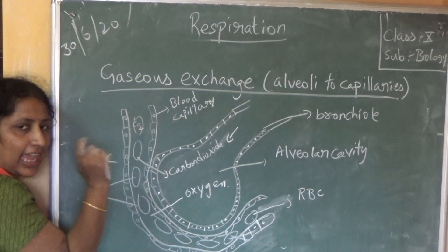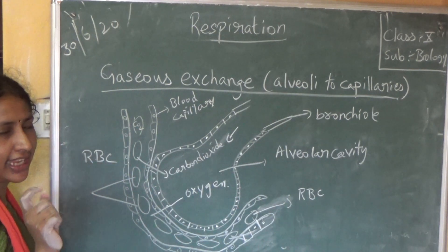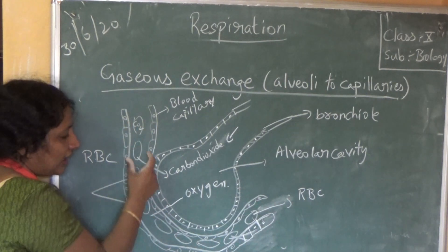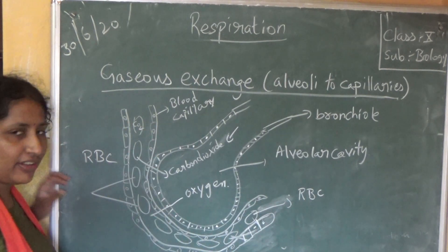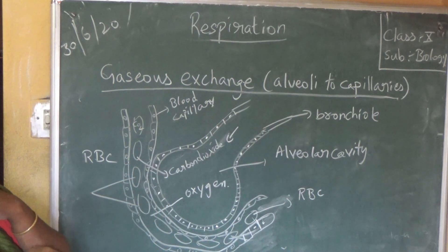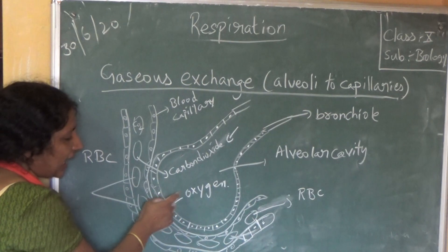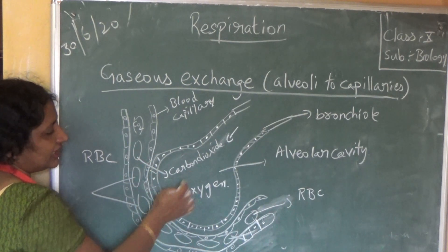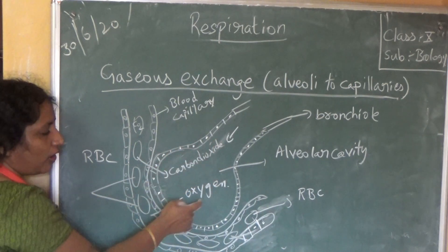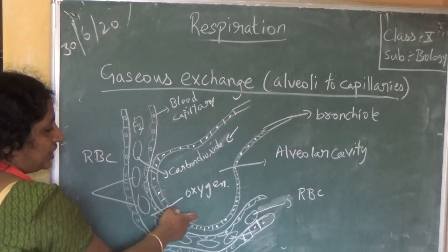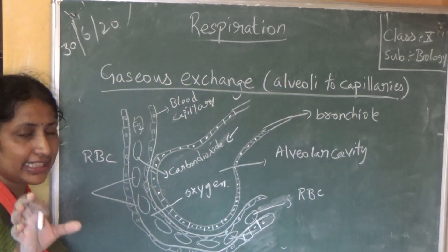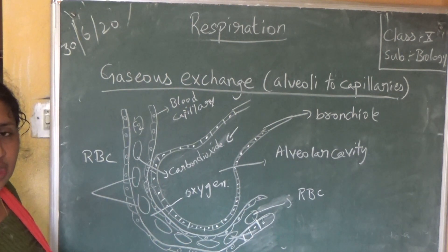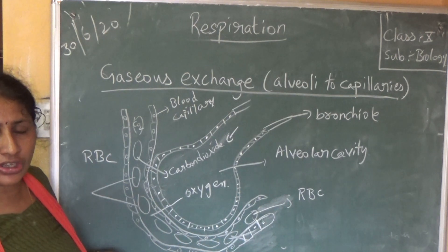The RBC has carbon dioxide, so this brownish-reddish colored blood is flowing into the capillaries. When it comes to the alveoli — because alveoli are surrounded by capillaries — the carbon dioxide is given to the alveoli, and the oxygen present in the air mixture is taken by the RBC. The hemoglobin present in the RBC has very high affinity to attract and combine with oxygen.